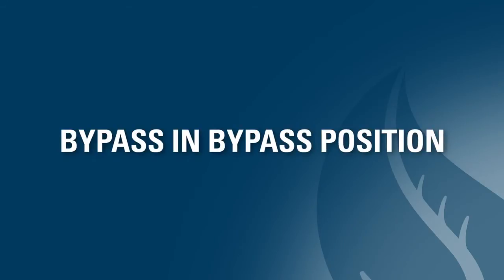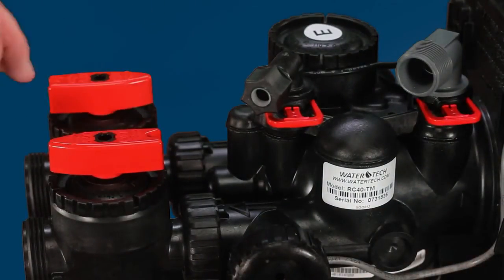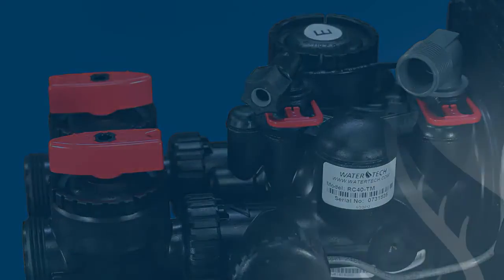The next item to check is the bypass. Make sure it is not in the bypass position and flowing hard, unprocessed water to the home. If the bypass is not in the service position, open the bypass so that the water is flowing through the system and being softened.